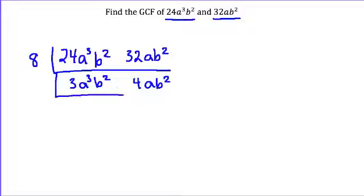Now I'm going to look at the variables. So I'm going to look at the a's first. I have a cubed on the left and just a on the right. I know a can be taken out, so I'm left with 3a squared b squared and 4, the a's have been cancelled out, b squared.